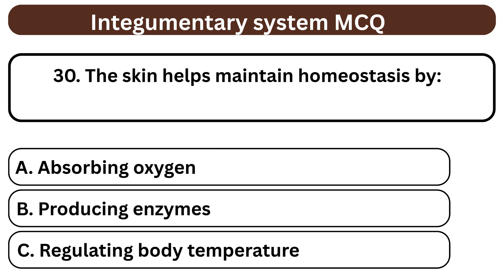Question 30. The skin helps maintain homeostasis by A. Absorbing oxygen. B. Producing enzymes. C. Regulating body temperature. The answer is C. Regulating body temperature.